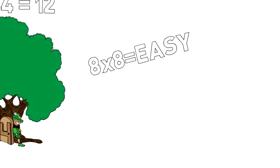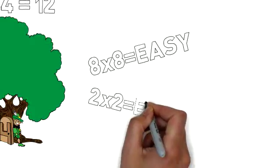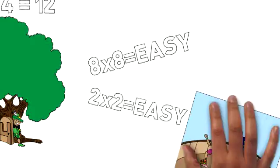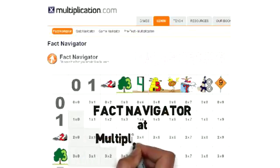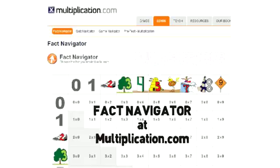What's cool about our system is eight times eight is just as easy to remember as two times two. It's just another funny picture. To see the pictures and hear the stories, go to the Fact Navigator in Multiplication.com and choose the fact you want to learn.